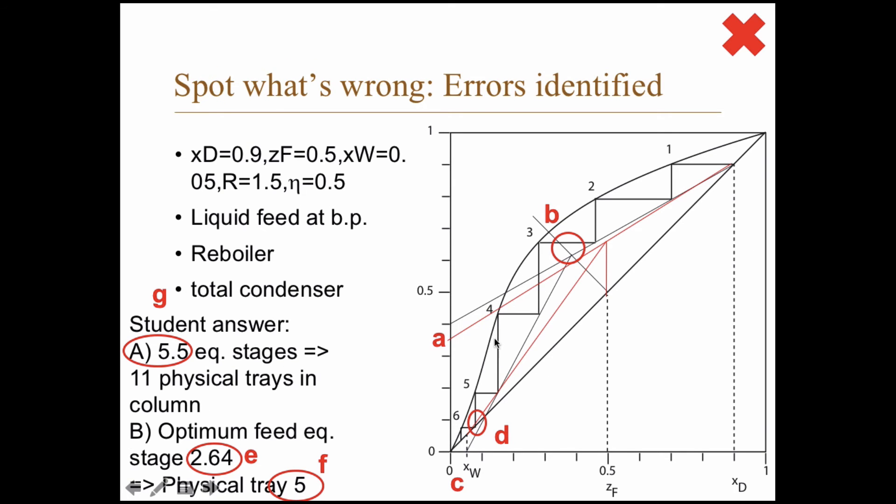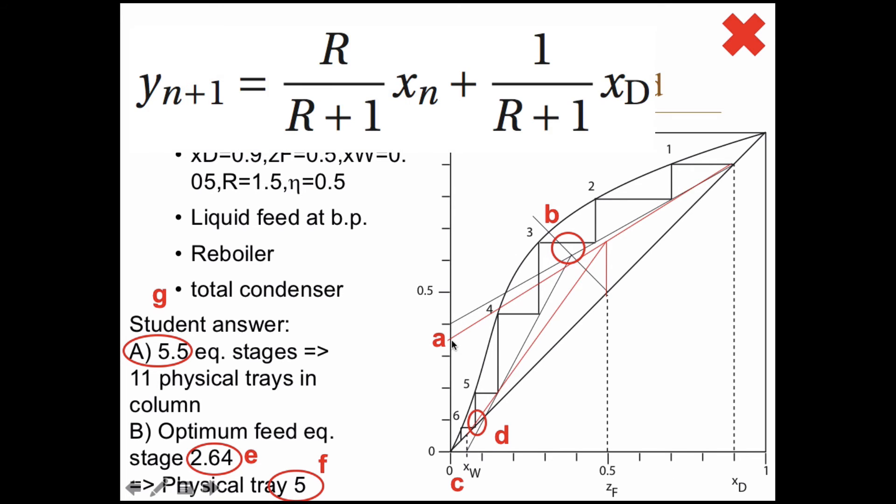So the first thing is that this line here is wrong. The upper operating line is wrong. So what the student has done here is to forget to multiply with xd. If you have x equals zero, then the y value for the upper operating line is xd divided by r plus one. And you get 0.4 if you forget xd and just put one there instead.